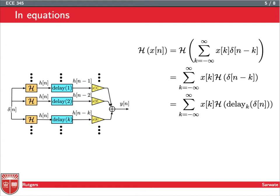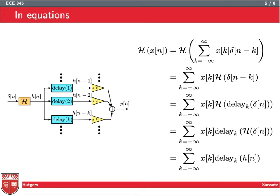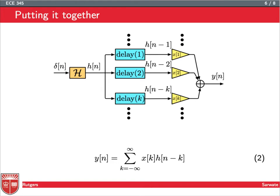Stepping one step further: we write delta of n minus k as a delay of k applied to delta of n. Then, since h and the delay can be switched by time invariance, we switch the delay with h, and use the fact that h with input delta of n is just h of n. So h applied to the delay of k times delta of n gives h of n minus k. And we get our final result: y equals the sum of x of k times h of n minus k.